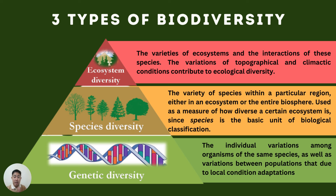Moving on to species diversity — this is the variety of species found in a particular region, either in an ecosystem or the entire biosphere. The species is the basic unit of biological classification. For example, there are different kinds of cats — different variation or species of cats.